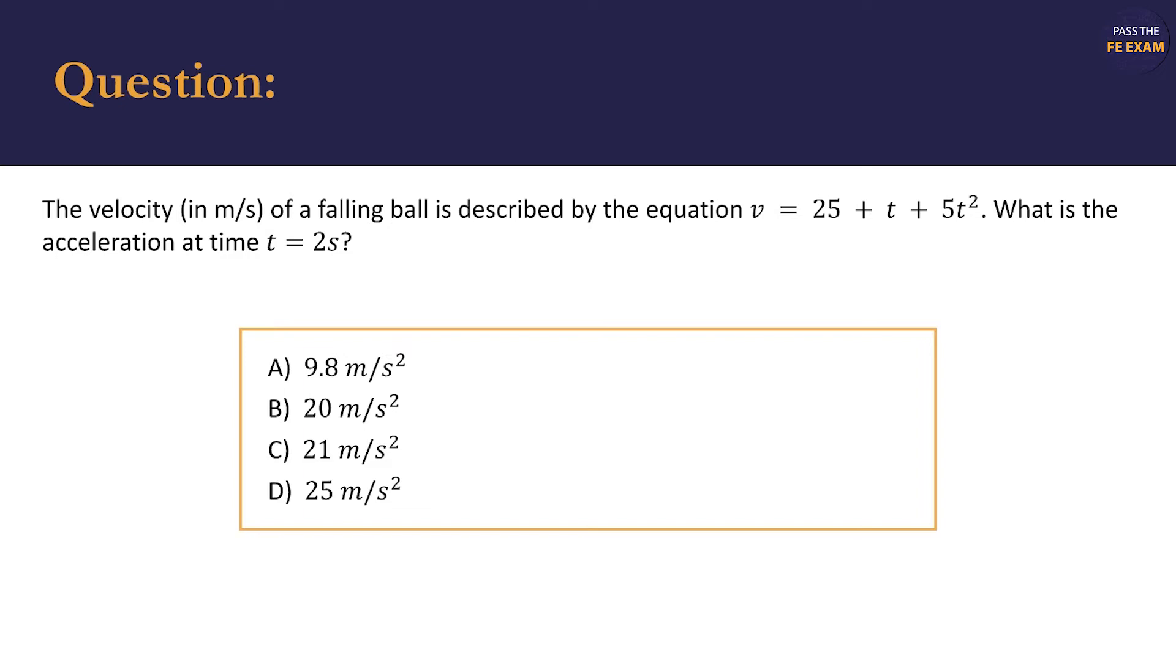The provided possible answers are A, 9.8 meters per second squared; B, 20 meters per second squared; C, 21 meters per second squared; and D, 25 meters per second squared.